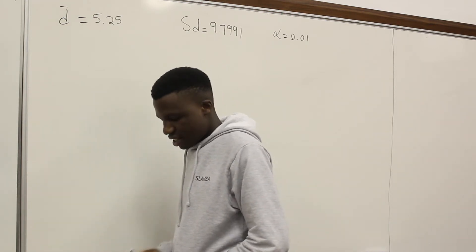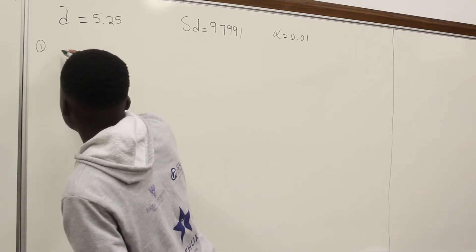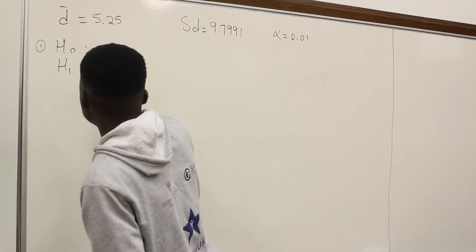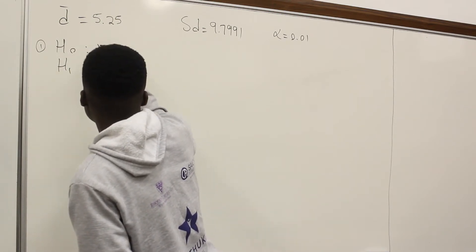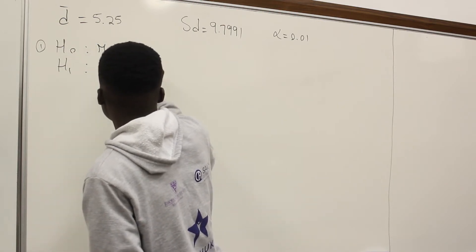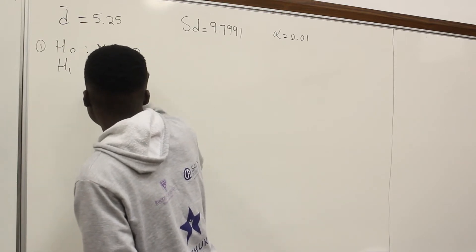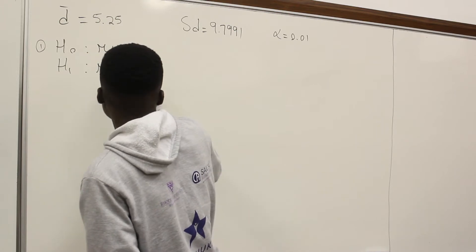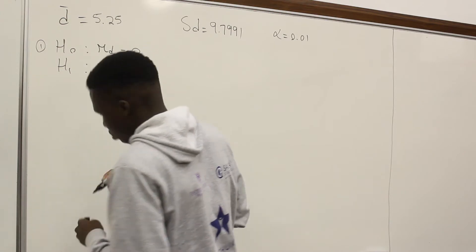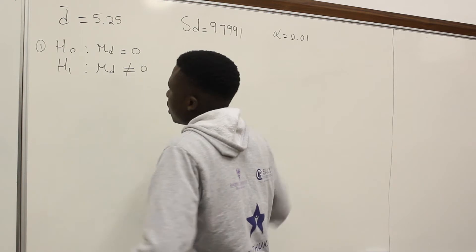The first step is the hypothesis: define H₀ and H₁. H₀: the mean difference μ_d equals zero. H₁: the mean difference μ_d is not equal to zero, because we want to test if there is a difference.